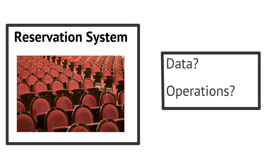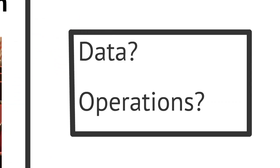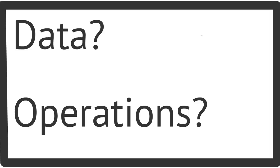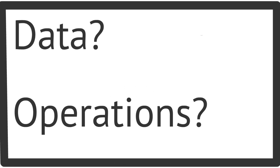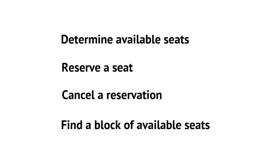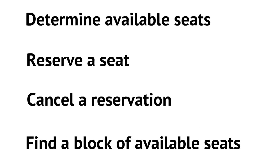Let's revisit the reservation system example from the abstract data type video — modeling a reservation system for a concert hall. In terms of an abstract data type, we think about what the data items are and what the operations are. For the data, we need to represent the seats and whether they're reserved or available. For the operations, we need to determine available seats, reserve a seat, cancel a reservation, and maybe find a block of available seats.